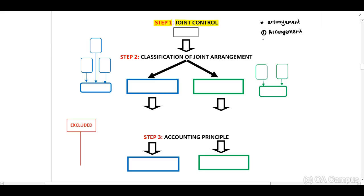The second important element: we need to identify the sharing of control. No single party can decide on its own, so we need to identify who has to make decisions on what. And then number three, extremely important: the agreed consent. If there are two parties in our arrangement, both of these parties should agree to decisions being made.